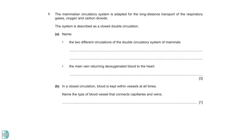The first question is about the mammalian circulatory system. In part A, you have to name the two different circulations of the double circulatory system of mammals. We have the pulmonary circulation, which transports blood from the heart to the lungs and then back to the heart. And we have the systemic circulation, which transports blood to the body, then back to the heart.